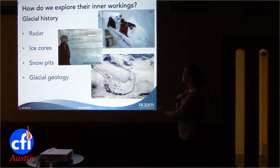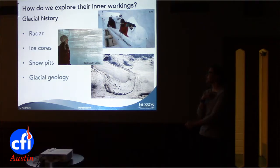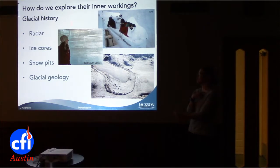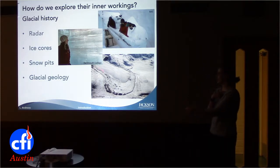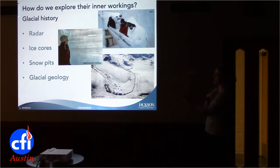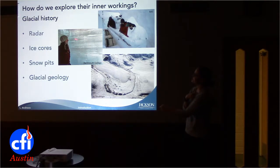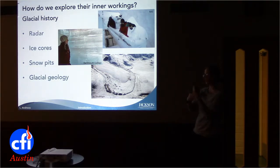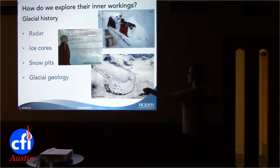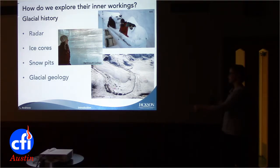We have ice cores, and for more recent changes we can use snow pits. You dig a big box, dig a big box next to it, allow the sun to shine through, and you can see your annual layering. You can also see wind-blown layers — this is actually sort of a dune that's been cut off. We can also use glacial geology and terminal moraines.